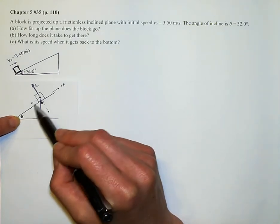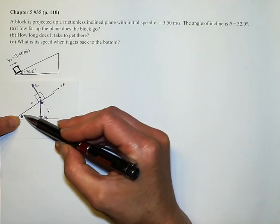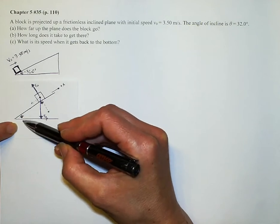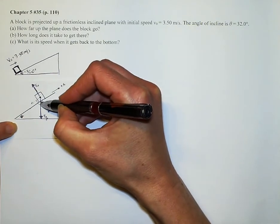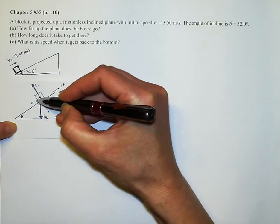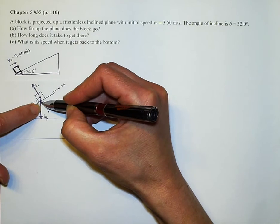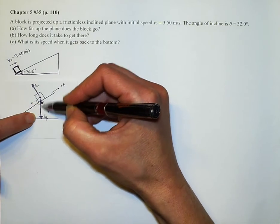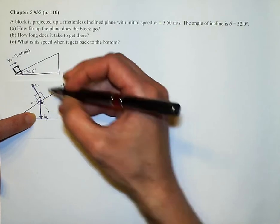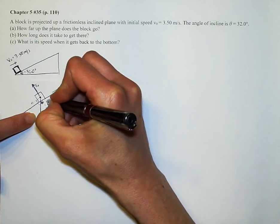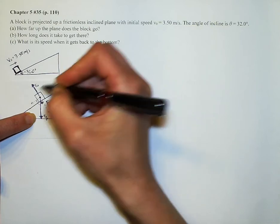I wanted to show how to get the components of your weight vector. If this is our theta, then this angle right in this corner would be 90 minus theta, meaning that since these are also 90 degrees to each other, if this is 90 minus theta, then this is theta again.